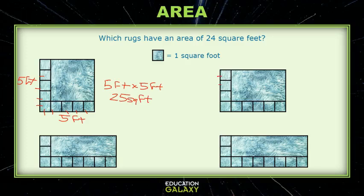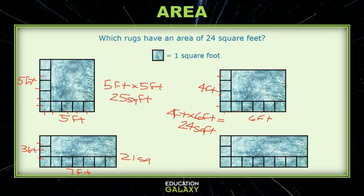This next one has one, two, three, four feet and the other side is one, two, three, four, five, six feet and four times six is looking a lot better as an option of being 24 square feet. Hooray! Okay, we just have the last two to check. Here I have three feet and across the bottom here one, two, three, four, five, six, seven feet. Three times seven is 21, so this is not going to be one of our answers.